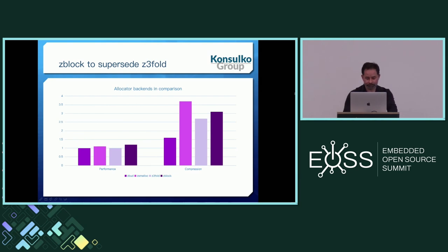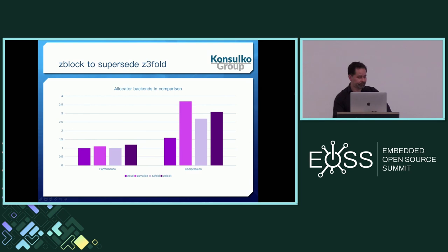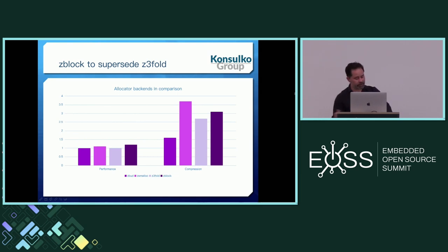Comparing ZBlock with existing allocator backends: it's still very simple, has a small code footprint, and is highly configurable because we can specify the table of block lists in many ways — though currently this is a static table. It operates fast, doesn't have a ratio limit like Z3fold or ZBud, and doesn't require MMU like ZSMalloc because it doesn't use physically non-contiguous pages. It has a compression ratio somewhere between Z3fold and ZSMalloc. Extending the previous chart with ZBlock, it shows superior performance and good enough compression. The ultimate aim is to submit it to the mainline and have it supersede Z3fold.